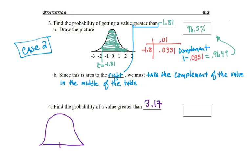Greater than 3.17. I draw my curve. 3.17 is to the right of 3, and so I'm finding this tiny area to the right. So I look up the value going one place after the decimal for the left, two places after the decimal on the top, to find 0.9992.